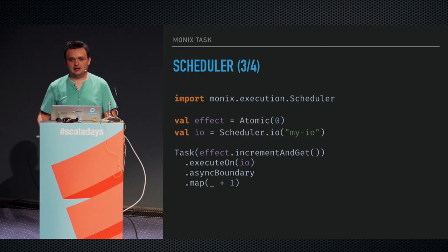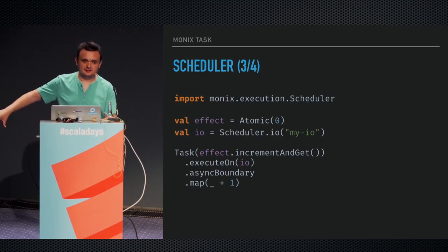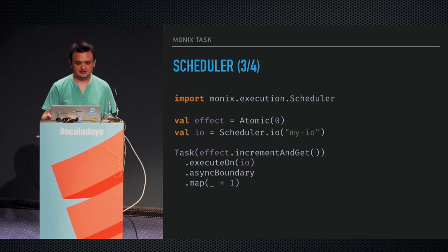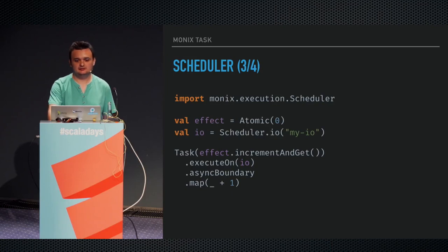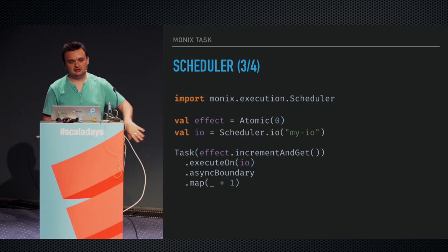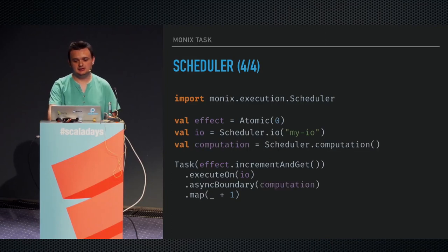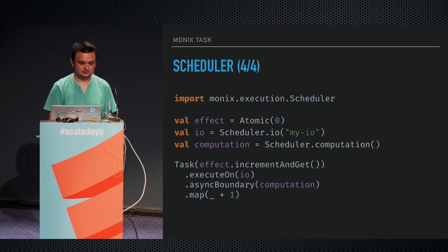RunAsync takes the scheduler implicitly from the context, but you can specify it explicitly. You can say you want part of the task to execute on a scheduler meant for IO operations — one that doesn't have a maximum number of threads bounded for blocking stuff. Then you can introduce an asynchronous boundary to jump back to the default scheduler, which is meant for CPU-bound work. Execute-on is about shifting execution before that instruction, and the async boundary is for what happens afterwards, so subsequent map execution happens on the default scheduler instead of the IO one.